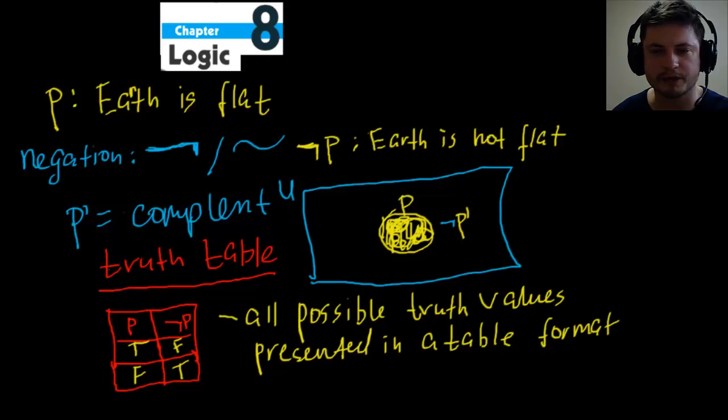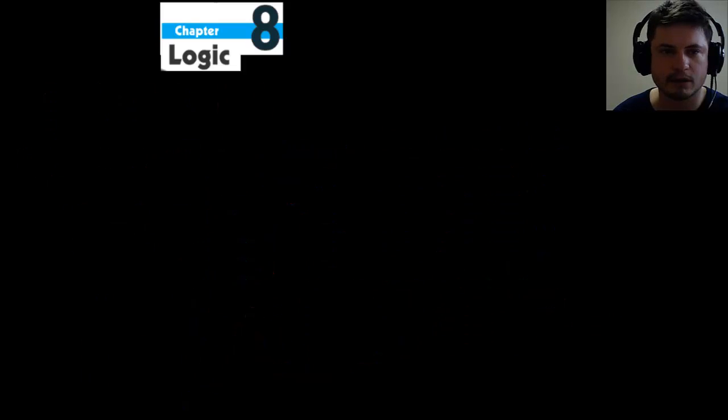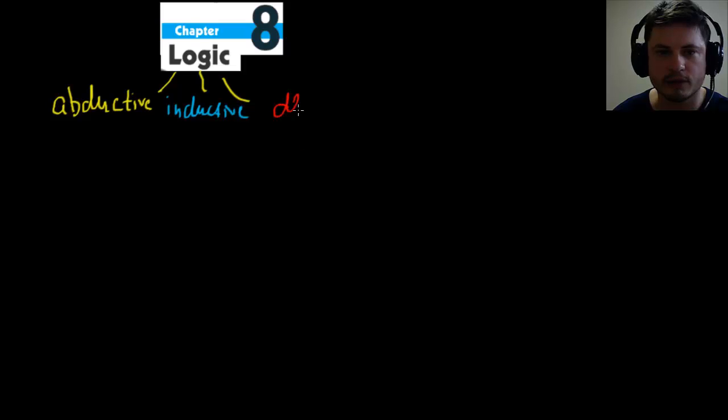And on your test, you're actually expected to write your answers in either truth table or Venn diagram, but more likely you'll be asked to do this. All right, so this is in a nutshell. In the next video, we're going to do some examples. But here, let me just summarize everything. So logic is divided into three types. There's abductive, inductive, and deductive.